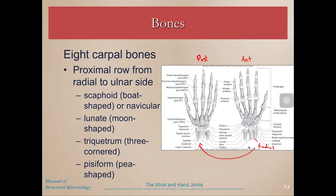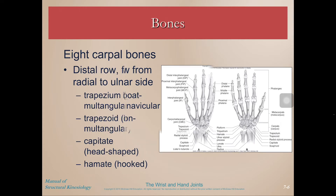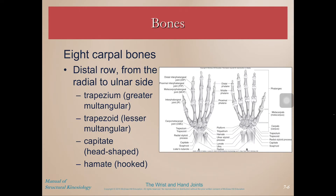Starting on the radial side and moving to the ulnar side, the proximal row of carpal bones is: scaphoid, lunate, triquetrium, and pisiform. Then the distal row is: trapezium, trapezoid, capitate, and hamate.